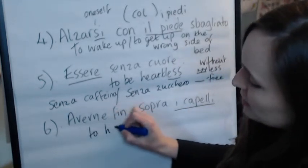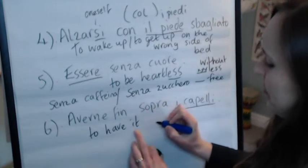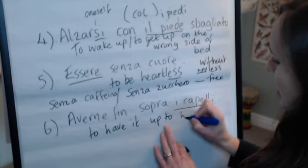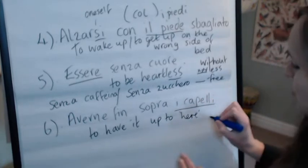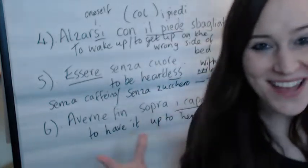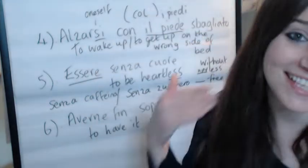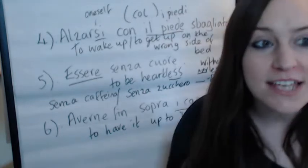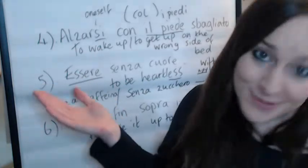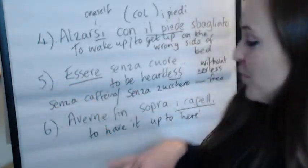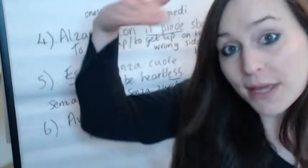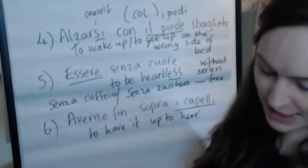Averne — to have it. Fin is a short form of fino, meaning 'up until.' Sopra normally means above or over. So in English it translates as 'I've had it up to here' — I've had enough. Averne abbastanza means to have enough, so it's to not be able to put up with something anymore, to have had your fill of someone's nonsense.